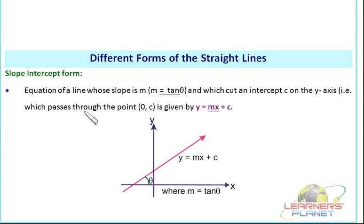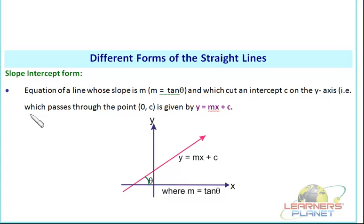Now we see the different forms of straight lines. The first and very important one is the slope-intercept form. The equation of a line whose slope is M and which cuts an intercept C on the Y-axis — that is, it passes through the point (0, C) — is given by Y = MX + C.